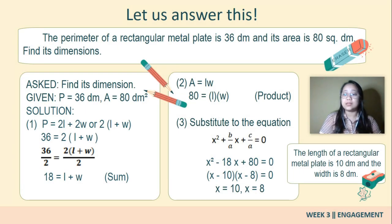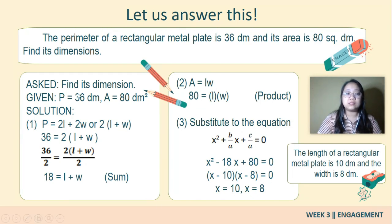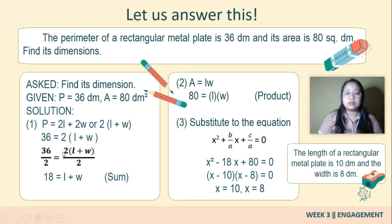The larger number is the length and the smaller number is the width, so the length of the rectangular metal plate is 10 decimeters and the width is 8 decimeters. To verify: 10 plus 8 equals 18, and since perimeter equals 2 times (length plus width), we get 2 times 18 equals 36 decimeters — our answer is correct.